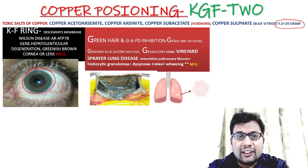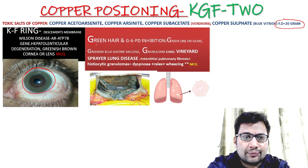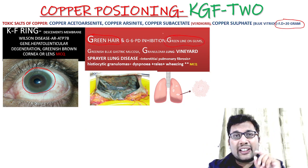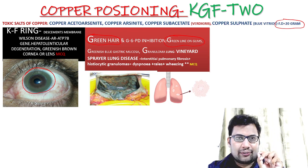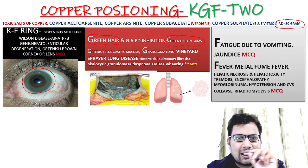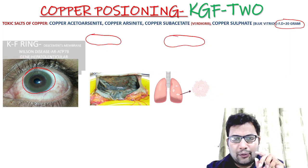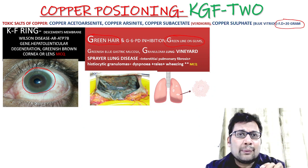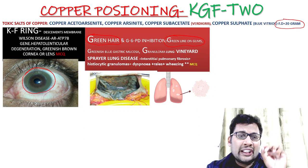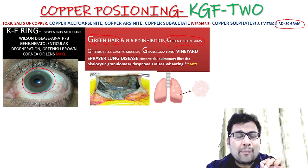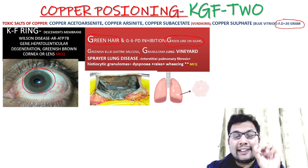G can also stand for green hair, green line on gums, or G6PD inhibition. The granuloma of the lungs — Vineyard Sprayer's Lung Disease — is characterized by interstitial pulmonary fibrosis and histiocytic granuloma. Clinical features include dyspnea, rales, and wheezing — this can be an MCQ.